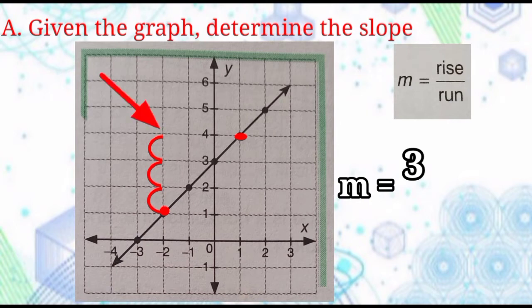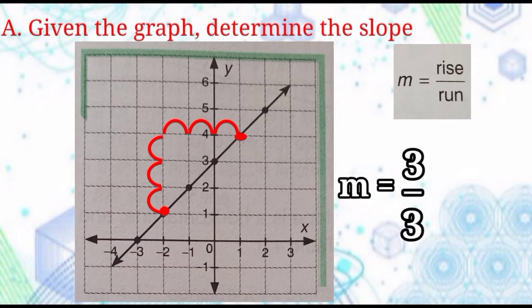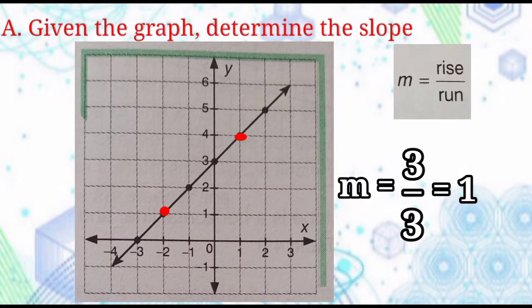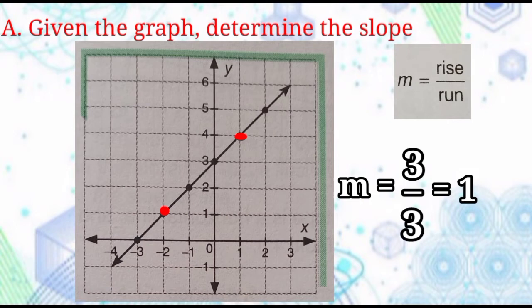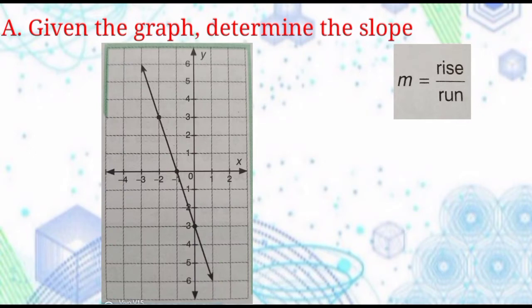3. So this point rises 3 units going to the second point. From here, count the units it runs: 1, 2, 3. Therefore, it runs 3 units going to the second point. The slope is equal to 3 over 3, and the simplest form is 1. Observe that the line is rising from left to right. Therefore, the sign of the slope is positive.